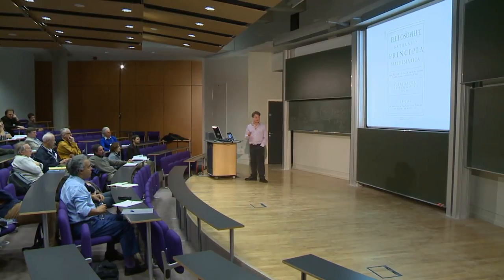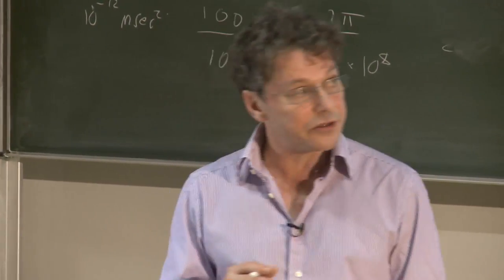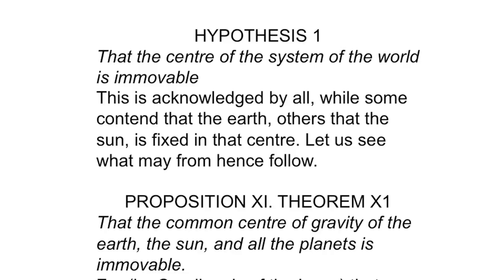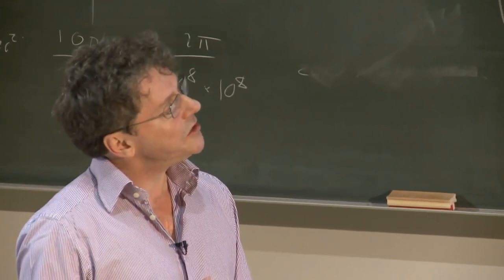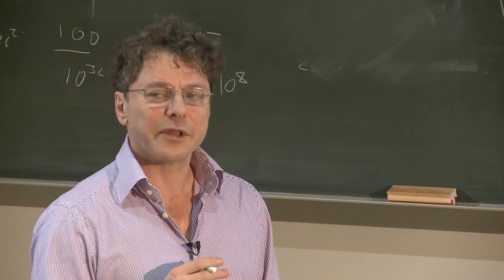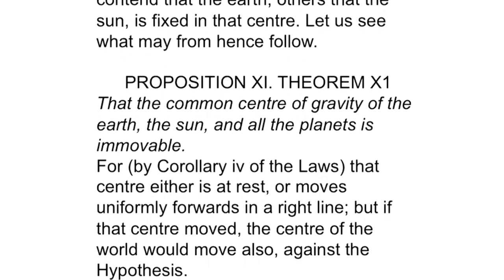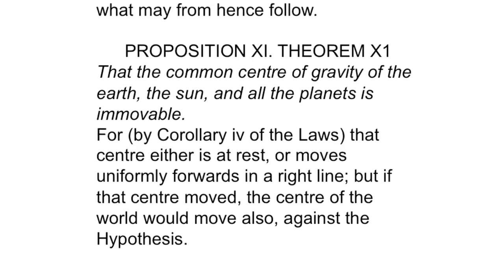I come back to the point that Newton actually thought he had absolute positions, absolute velocities. He never had anything to say about absolute positions, but he did have something to say about absolute velocities. He made a hypothesis that the centre of the system of the world is immovable. And the point here is that everybody agreed with this hypothesis. There's some centre of the world and it's immovable. None of his opponents would have disputed that. It's interesting that he called it a hypothesis. This is in the third edition of Principia. There were only three hypotheses in the third edition of Principia. Proposition 11. That the common centre of gravity of the Earth, the Sun and all the planets is immovable. For, by corollary four of the laws, that centre either is at rest or moves uniformly forwards in a right line. But if that centre moved, the centre of the world would move also against the hypothesis.